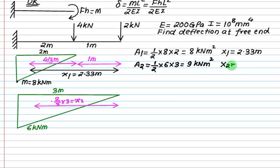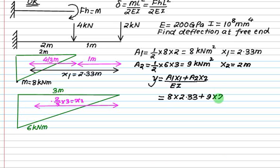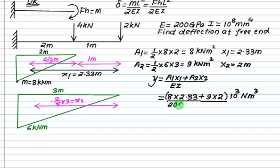X2 is 2/3 of L, which is 2. Plus 9 into 2. The units are kilonewton — kilo is 10 to the power 3, so kilonewton is Newton times 10³. The value of E is 10 to the power 9, and 10 to the power 8 gives 10 to the power minus 4.